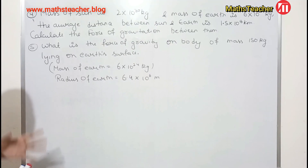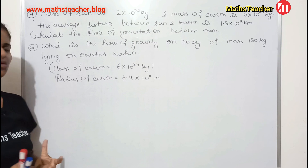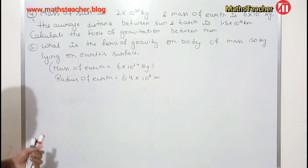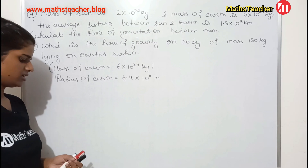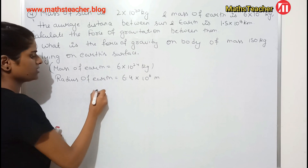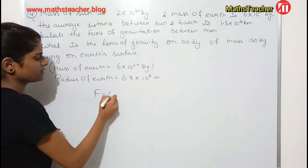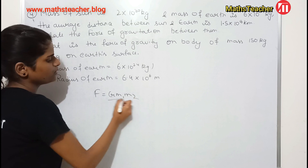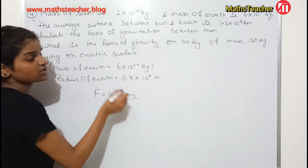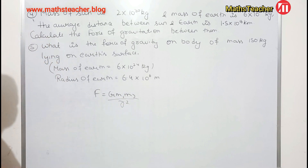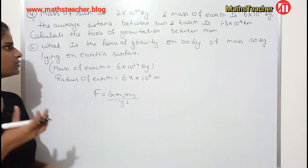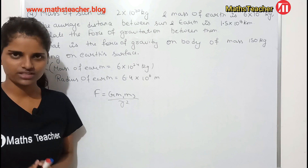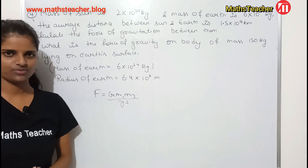The last two questions, number 4 and 5, you have to solve as homework and comment down your answers. Use the formula for force of gravity: F equals G m1 m2 upon r square. Let's end this video lecture. Thank you so much for watching this video.